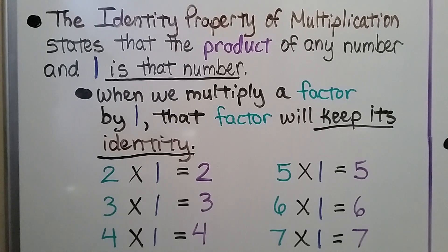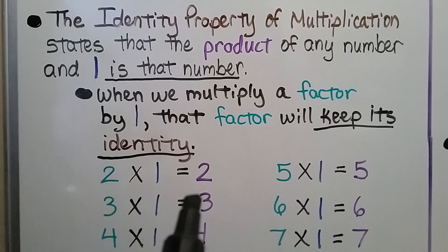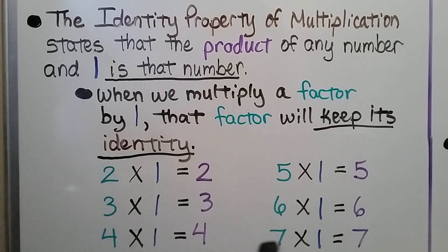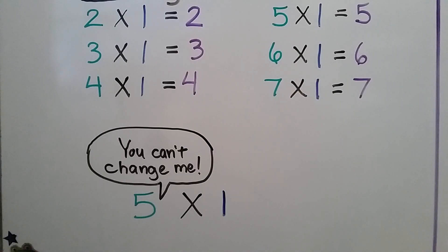The identity property of multiplication states that the product of any number and 1 is that number. When we multiply a factor by 1, that factor will keep its identity. 2 times 1 is still 2, 3 times 1 is still 3, 4 times 1 is still 4. Whatever the factor is, if it's multiplied by 1, it keeps its identity — it is that number. It doesn't matter how big or small the number is; if it's multiplied by 1, it stays the same.